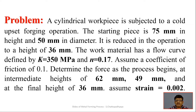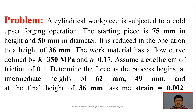The flow curve is represented by an equation with a constant and an exponent. For this case, k = 350 MPa and n (the exponent) = 0.17. We assume a coefficient of friction μ = 0.1. We need to determine the force — which is important for designing the machine for this upsetting operation — at intermediate heights of 62 mm, 49 mm, and at the final height of 36 mm. The strain increment is assumed to be 0.002.